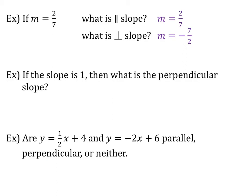Let's look at the next example. If the slope of a line is 1, then what is the perpendicular slope? Well, let's think about 1 as a fraction — it's going to be 1 over 1. So if I flip the fraction, it's still going to be 1 over 1. And then if I change the sign, it's going to go from positive to negative. So the perpendicular slope to 1 is going to be negative 1.